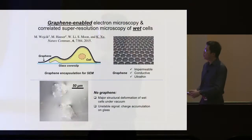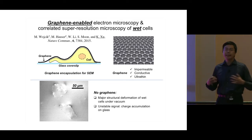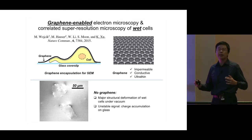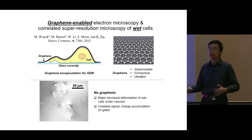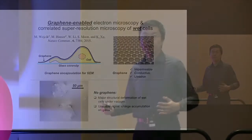The major challenge is that electron microscopy requires dehydrated cells, but drying the cells typically changes their structure, making it very hard to correlate with super-resolution images. What we do is use graphene to protect a cell on a glass coverslip, enabling electron microscopy of wet cells. Graphene is a single layer of carbon that is impermeable to gas or liquid, fully conductive to electrons, and ultra-thin.